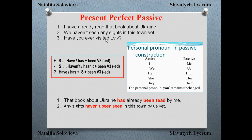And for a question: 'Have you ever visited Lviv?' The new subject will be Lviv. For a question, we put the auxiliary verb 'have' or 'has' first, then the subject, then 'been,' then the third form of the verb. Since Lviv is singular: 'Has Lviv ever been visited by you?' Note that 'you' remains unchanged in the passive construction.